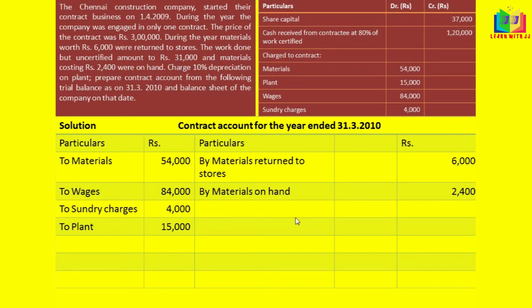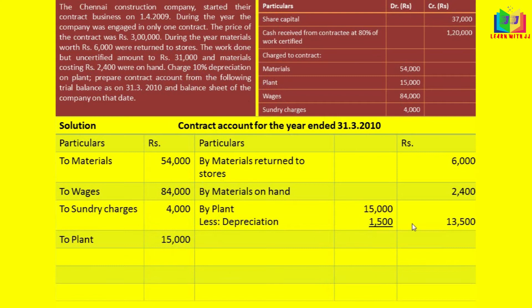Before writing the work in progress, we can calculate the depreciation on the plant. The depreciation rate is 10% and the value of the plant is 15,000. So 10% of that is 1,500. If we subtract that, we will write 13,500 in the outer column. After that, we can write the work in progress.